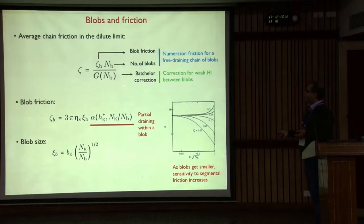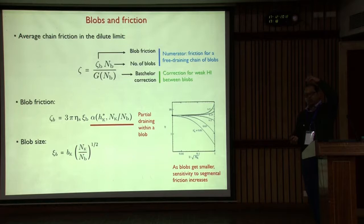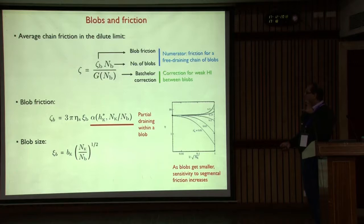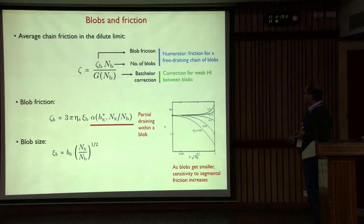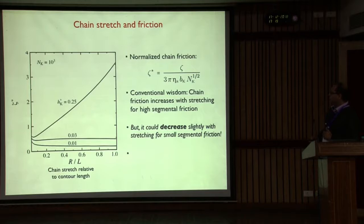The blob friction coefficient can also be calculated: given the stretch you know the blob size, which gives the Stokes drag of a single blob, plus a partial draining correction α from Zimm theory based on the number of Kuhn segments within that blob and the hydrodynamic interaction parameter h*. So I have all the ingredients to calculate the friction coefficient of a single blob, and given the number of blobs I also know the Batchelor correction. That's for a partially stretched chain.